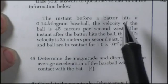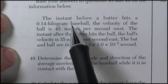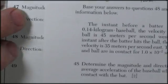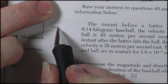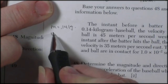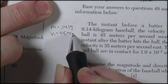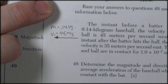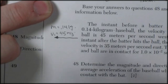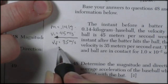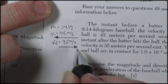I'm going to sketch it here. The instant before a batter hits, say, 0.15 kilogram baseball, the velocity of the ball is 45 meters per second west. The instant after the batter hits the ball, the ball's velocity is 35 meters per second eastward, so the velocity final is going to be 35 meters per second eastward. In the opposite direction.